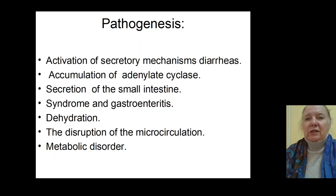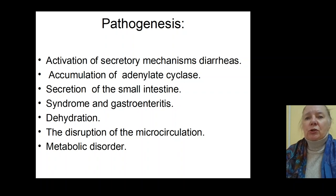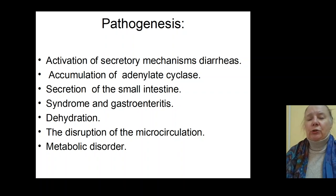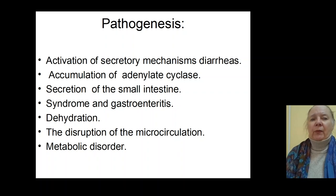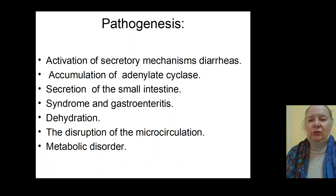When bacteria penetrate to the small intestinal, secretion begins and bacteria penetrate endocytes and glandular cells of the small intestinal, causing activation of the mechanism of secretion and secretory diarrhea — the mechanism of secretion of water and salt to the stomach and small intestinal. This is the adenylate cyclase mechanism: accumulation of adenylate cyclase which activates secretion of the small intestinal, forming nausea, vomiting, then secretory diarrhea and watery diarrhea — the syndrome of gastroenteritis in Salmonellosis.